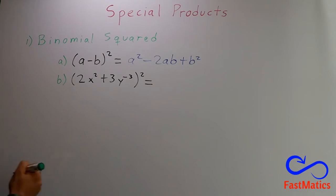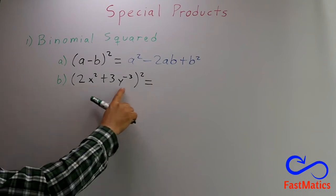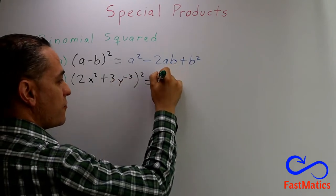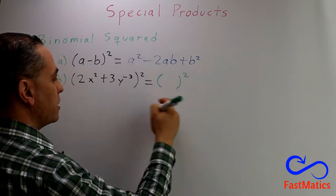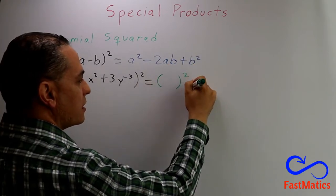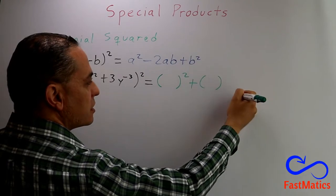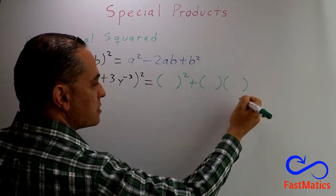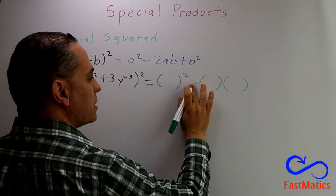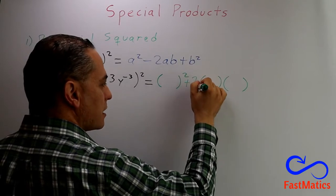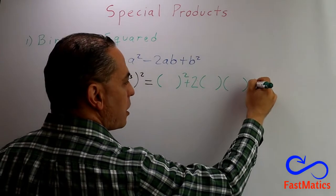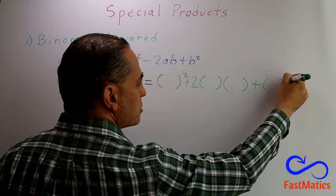If it is hard for you, you can make it, for instance, the first term squared. You copy the sign. The first times the second. But it is twice. And finally, plus the second squared.